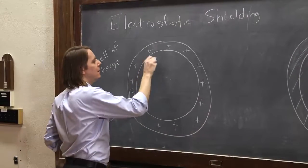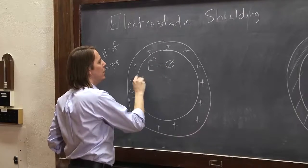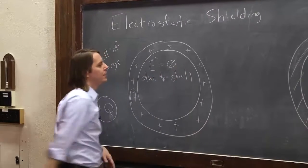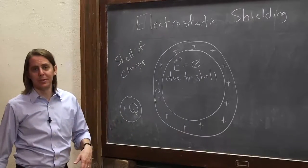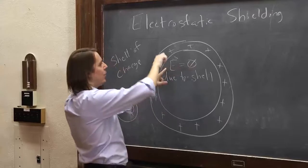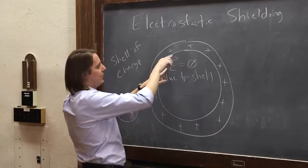Well, E, the electric field, will be zero due to the shell. That's a Gauss's law problem you'll probably do in the homework. You can show that the E field inside this thing is zero. All these charges make fields that cancel out.